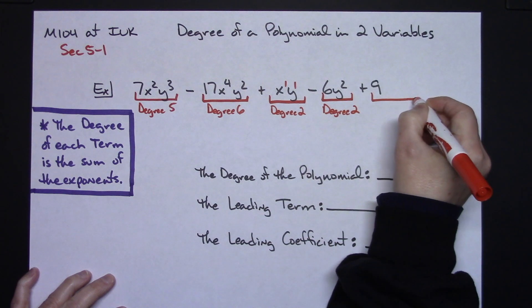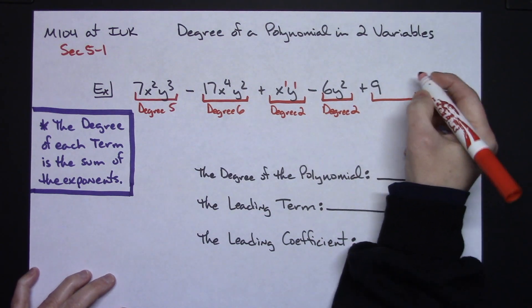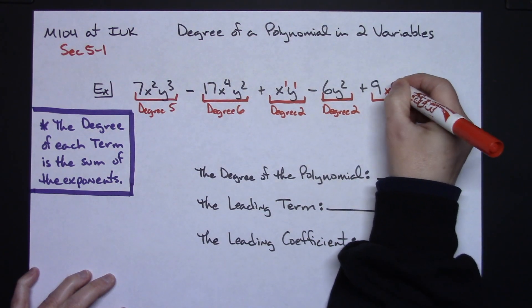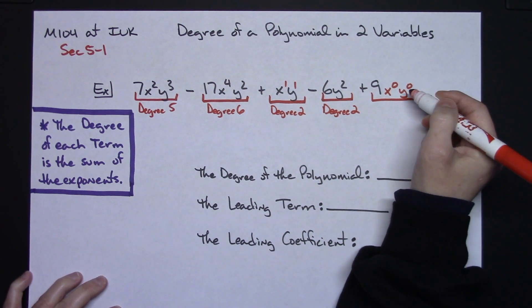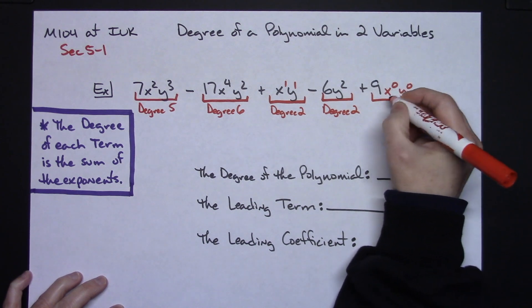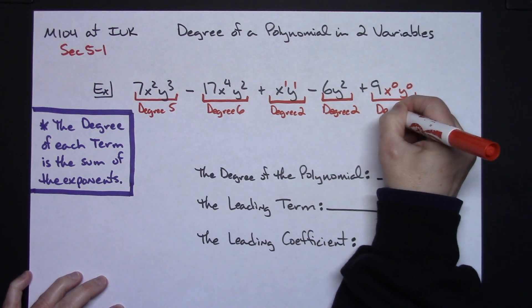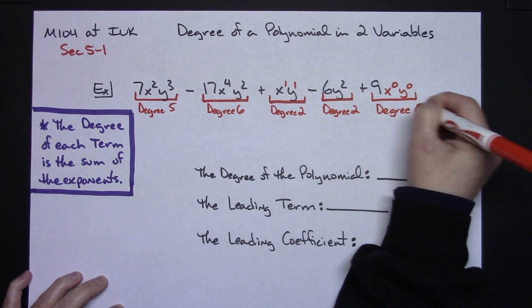Now this one right here is a constant. But technically I have an x to the zero power and a y to the zero power because anything raised to the zero power is always one. So then adding up those exponents, this is going to show that this constant has a degree of zero.